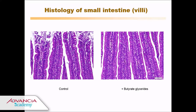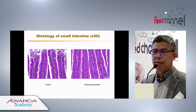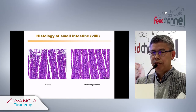We also looked at gut morphology in the small intestine — specifically the villi. The left side shows control birds without butyrate treatment, and the right side shows butyrate-treated birds. You can see the morphology of the villi in the butyrate-treated group is better and the integrity is improved.